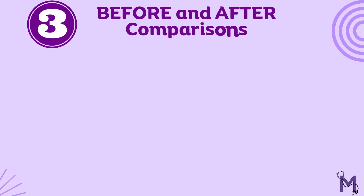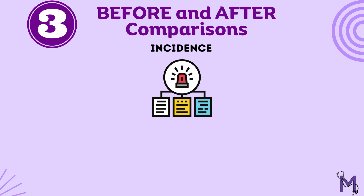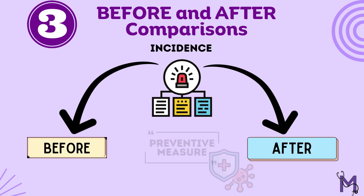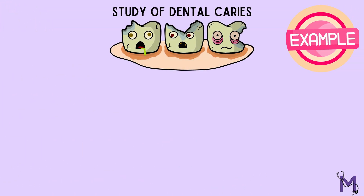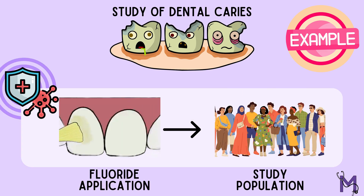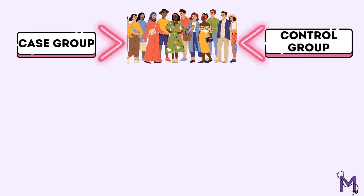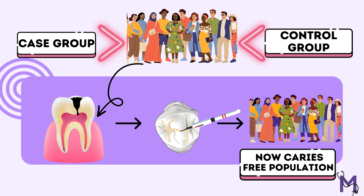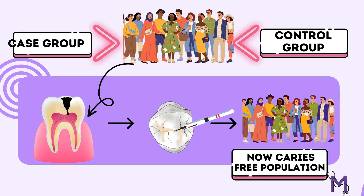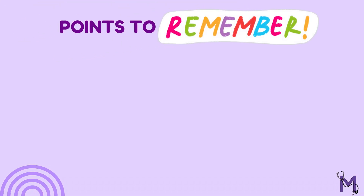Our last example is the before and after comparison. In this, we compare the incidence of the disease before and after the introduction of a preventive measure. For example, if our disease of study is dental caries and as a preventive measure we introduce fluoride application to the population we are studying, the same population will act as the control group, since they are the people who first had the disease and are now the same people who should not have caries anymore after the introduction of preventive procedures. In other words, the experiment here will serve as its own control.